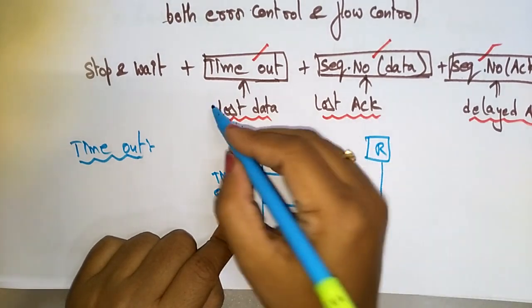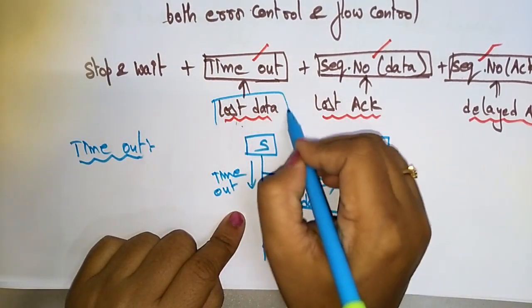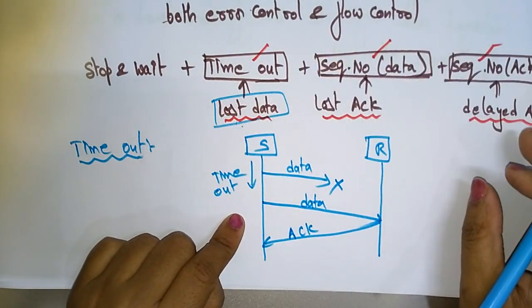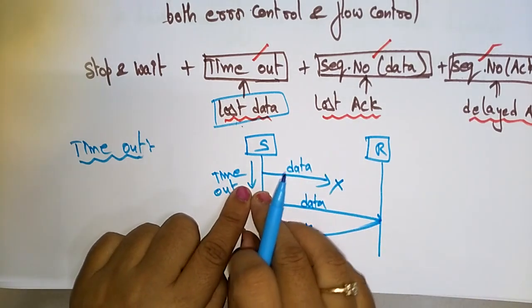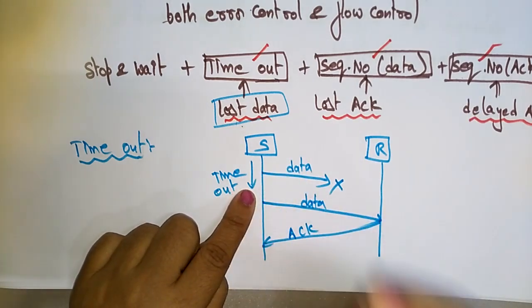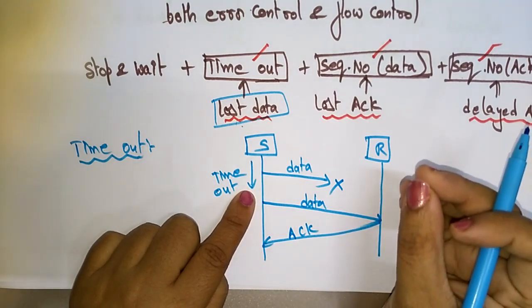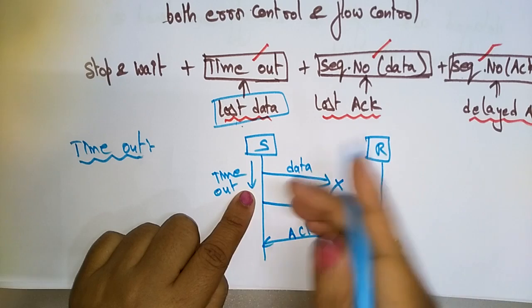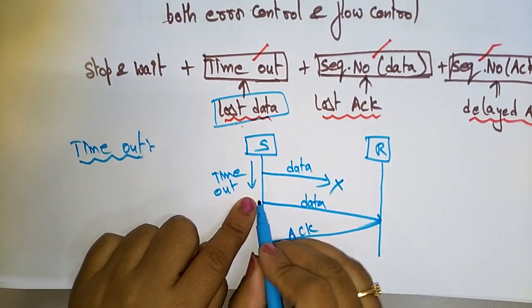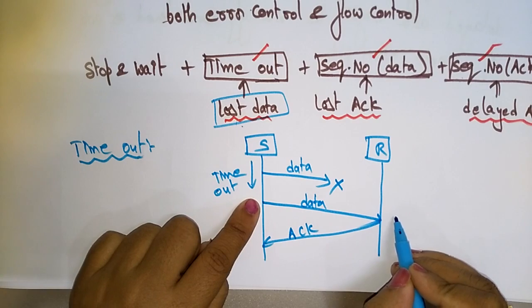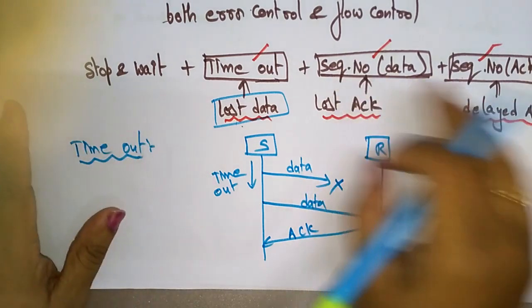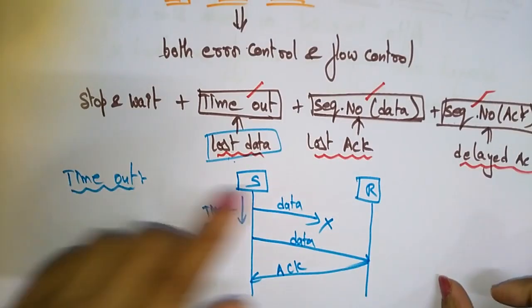After two minutes, the sender thinks the data was lost and sends it again. After the receiver receives it, the receiver sends the acknowledgement. So using the timeout concept, the lost data problem is resolved: the sender waits for a particular time, and when the time is out, it retransmits the same data to the receiver.